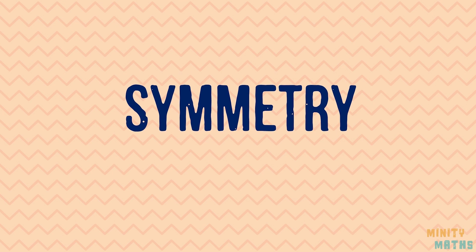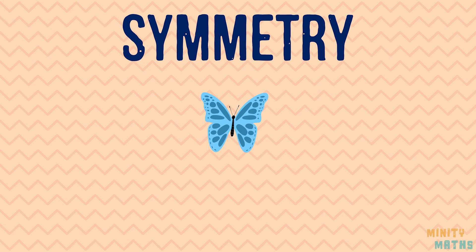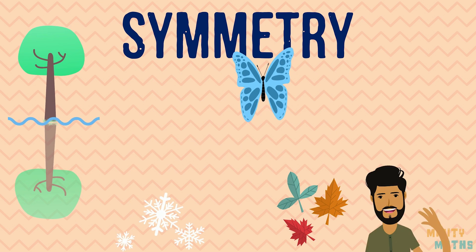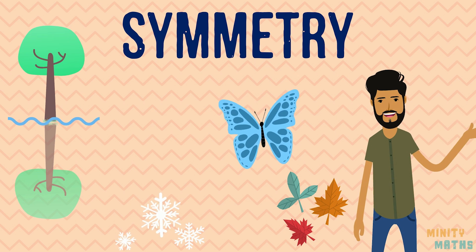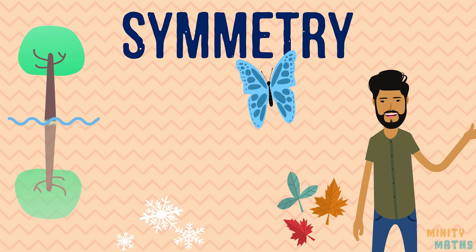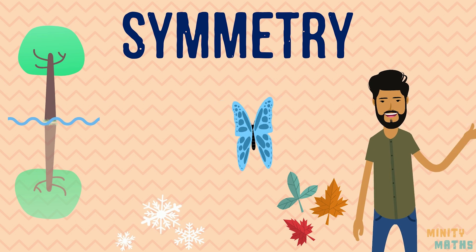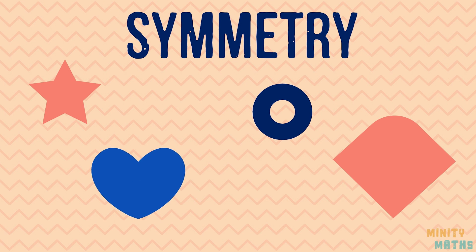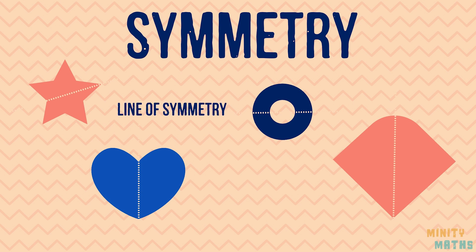So what is symmetry? Well, we see symmetry every day but may not realise it. In maths, symmetry refers to shapes which are identical on both sides of a line drawn through that shape. A line of symmetry is a line that cuts a shape exactly in half, having one side that exactly mirrors the other side.